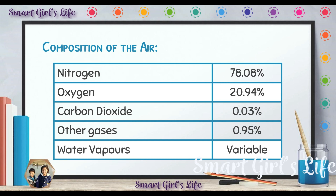There is 78.08% of nitrogen in the air. Then we have the second gas, oxygen — there is 20.94% of oxygen in the air. Then we have carbon dioxide — there is 0.03% of carbon dioxide in the air. Then we have 0.95% of the other gases present in the air, such as argon, helium, and other gases.